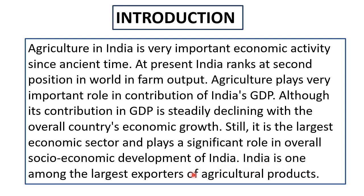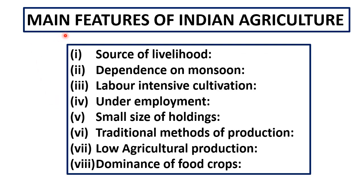India is one among the largest exporters of agricultural products. Now we will see the main features of Indian agriculture. The first feature is that it is the main source of livelihood — the largest percentage of the workforce of India is engaged in agriculture or other activities related to agriculture.